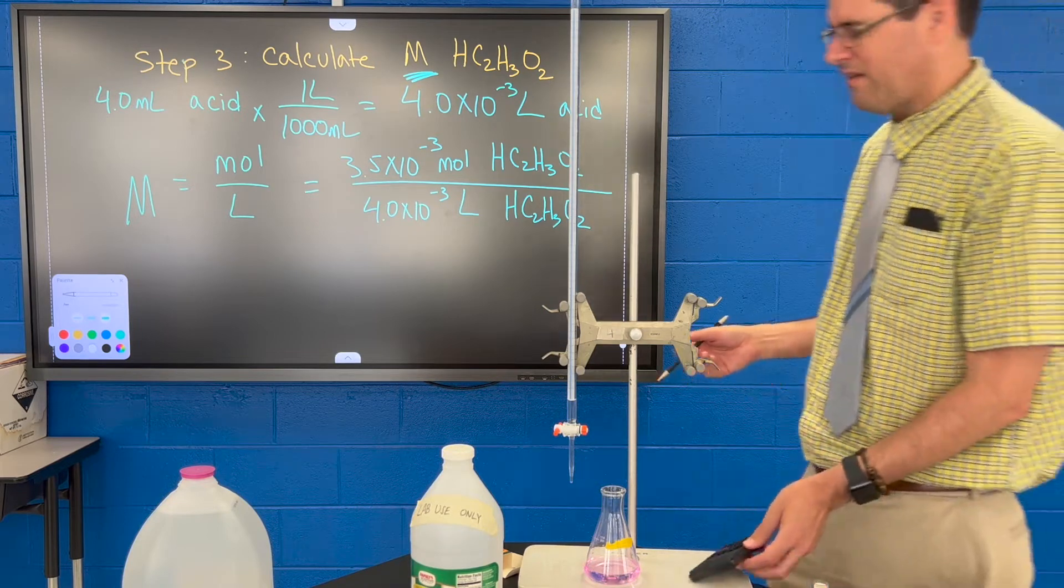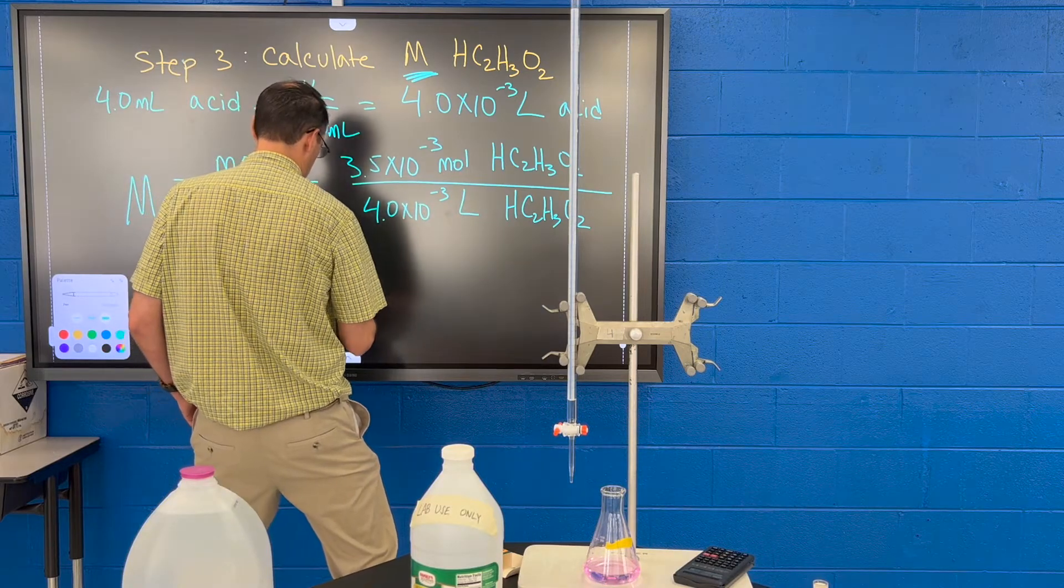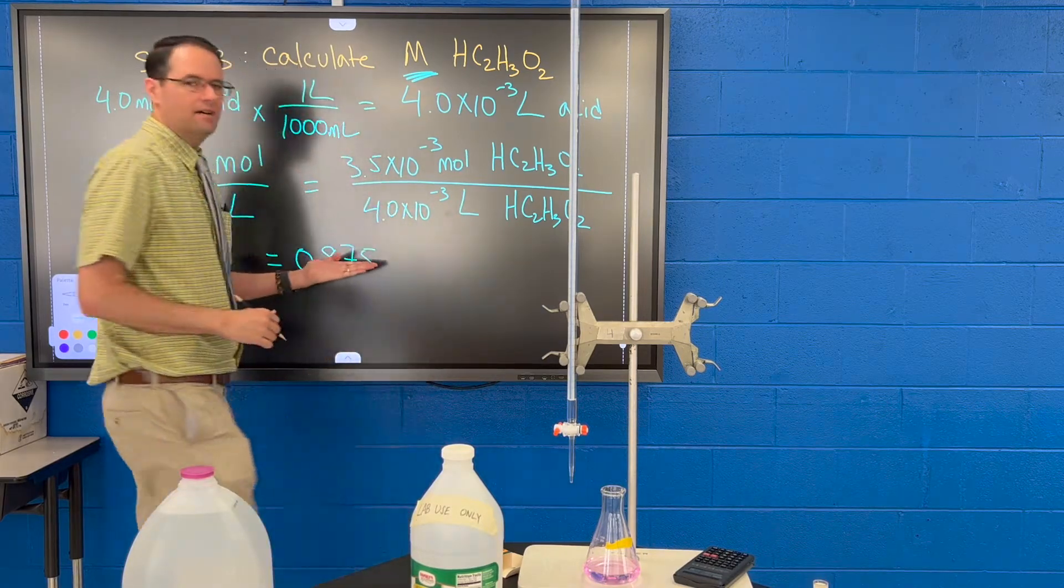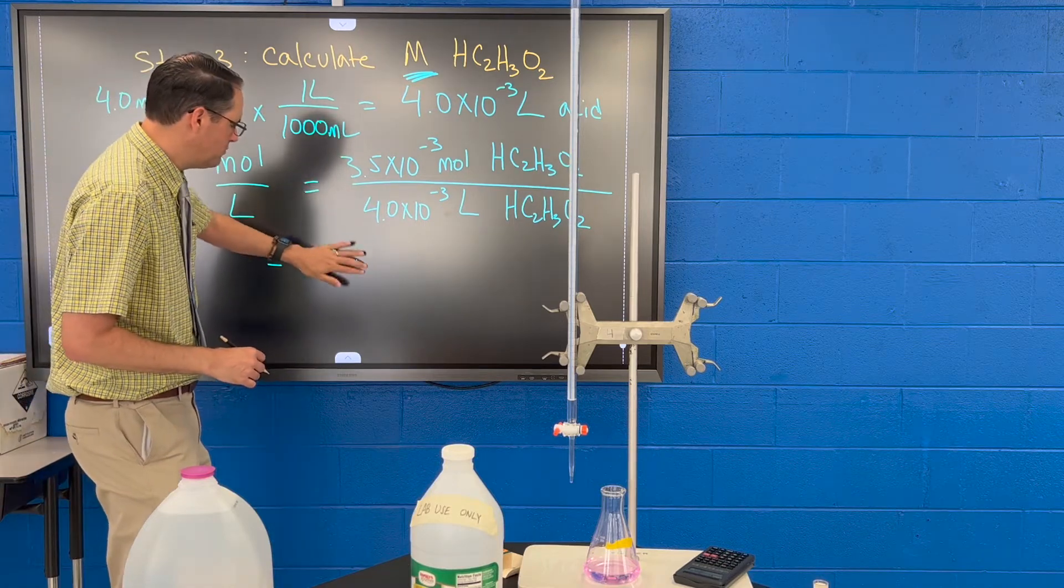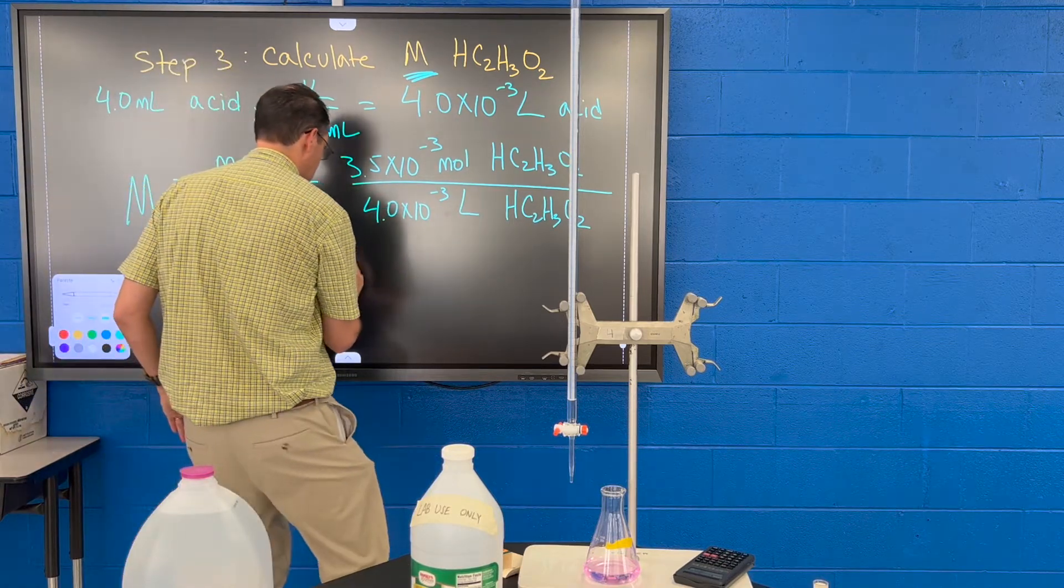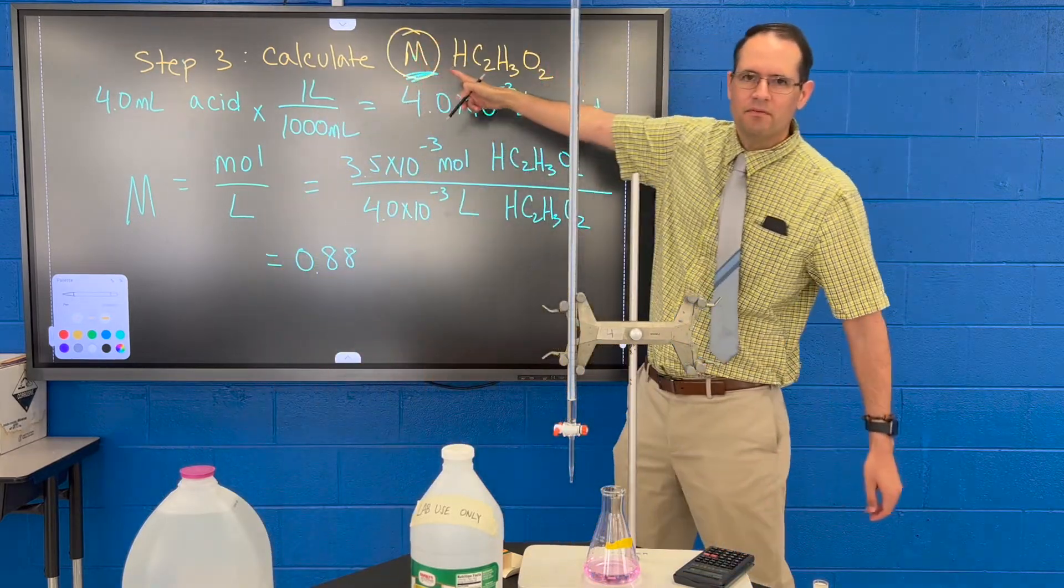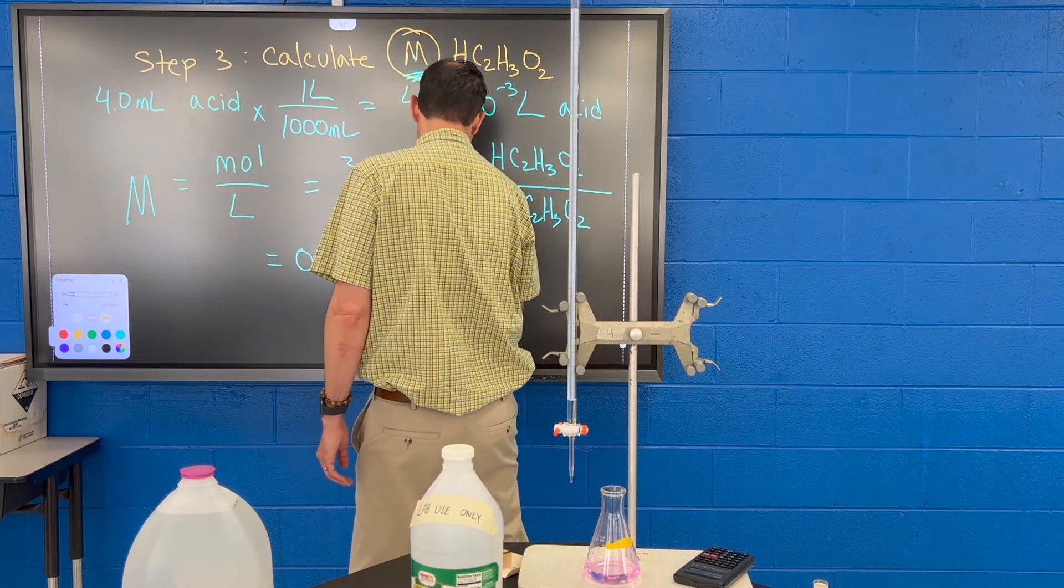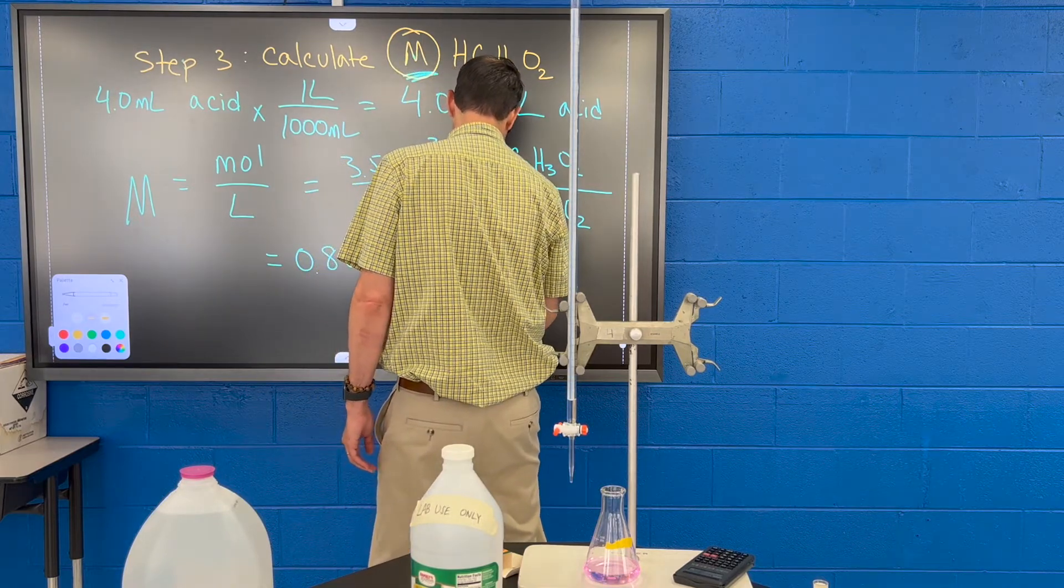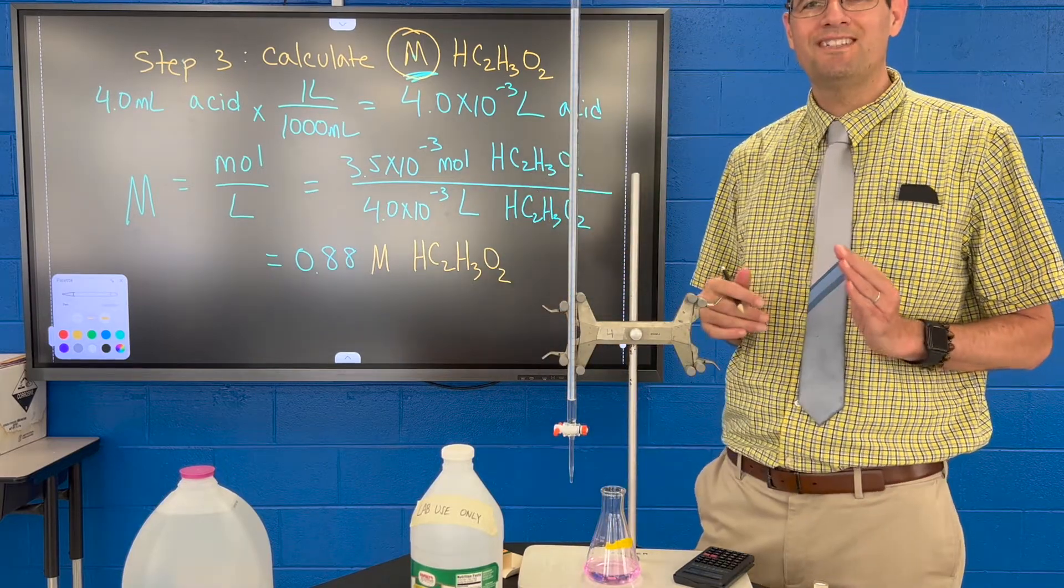And I get 0.875. Let's round it to two sig figs because this is made-up data anyway. I'm going to round it to 0.88. And for your units, you can just type or write capital M. And let's write our acid. That in a nutshell is what you're going to do with the potassium hydrogen tartrate lab.